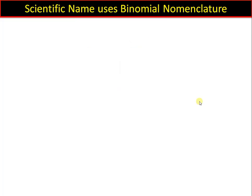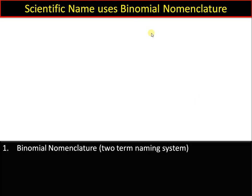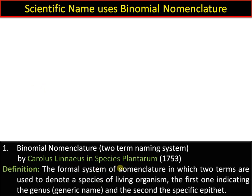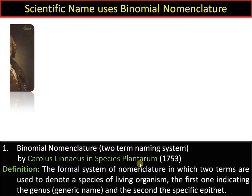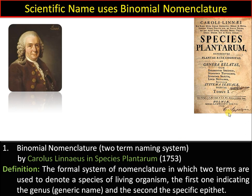Scientific names use binomial nomenclature. 'Bi' means two, 'nominal' means term — so it is a two-word naming system. Binomial nomenclature was put forward by Carolus Linnaeus, who is called the father of taxonomy. He used it consistently in his book Species Plantarum. Binomial nomenclature is a formal system of nomenclature in which two terms are used: the first indicating the genus name, and the second the specific epithet.